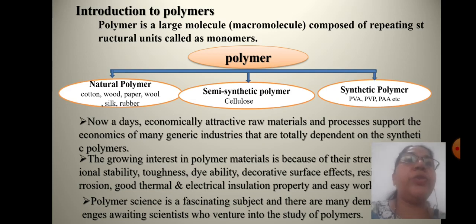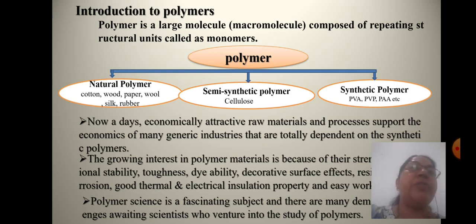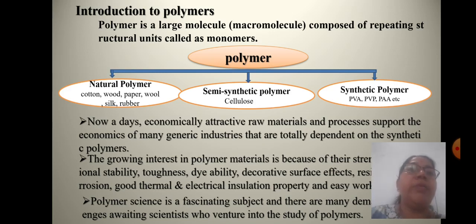Now, introduction to polymers. What is a polymer exactly? A polymer is a large molecule — a macromolecule — composed of repeating structural units called monomers. Polymers are classified into three types: natural polymers, which include cotton, wool, paper, silk, and rubber; semi-synthetic polymers such as cellulose; and synthetic polymers such as polyvinyl alcohol (PVA), polyvinyl pyrrolidone, and polyacrylamide.